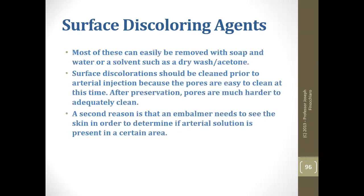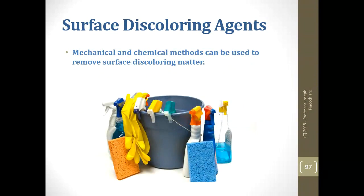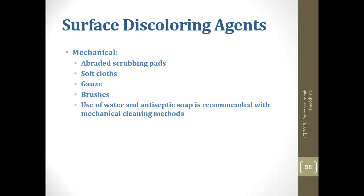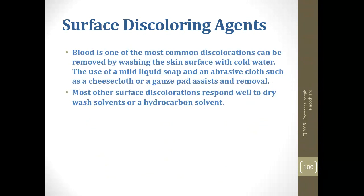Surface discoloring agents are basically any dyes — if you've grabbed the business end of an uncapped marker, you've gotten a surface discoloration. Most of them disappear with the proper solvent. Surface discolorations should be cleaned prior to injection so the material doesn't get preserved. Mechanical methods include braid cloth, gauze, brushes, and scrubbing pads with a lubricant. Chemical methods use solvents — the most common one we bump into is blood. Use a mild liquid soap with an abrasive cloth such as cheesecloth or gauze. Most other surface discolorations respond well to dry wash solvents like acetone.